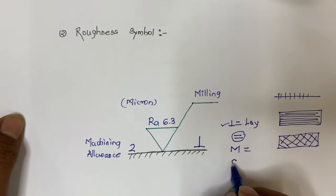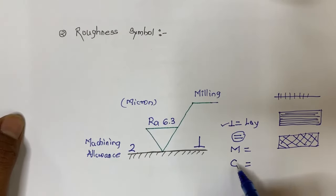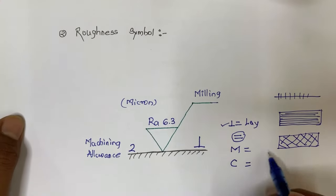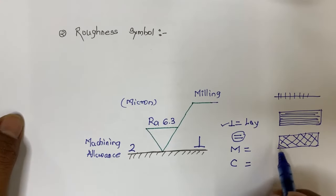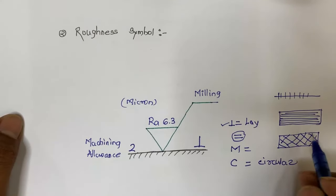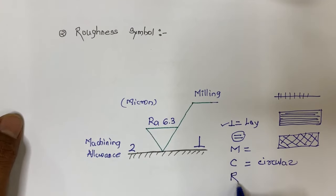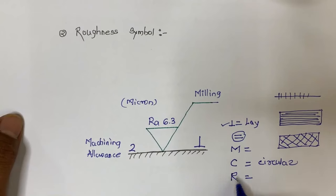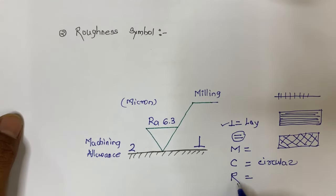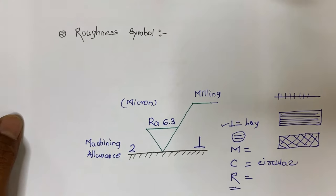Sometimes the notation 'C' can also be used to represent lay direction — C is for circular lay. If circular lay patterns are present on the surface, it is indicated with C. The last notation is 'R' — if lay patterns are in radial form, it will be indicated with this notation.